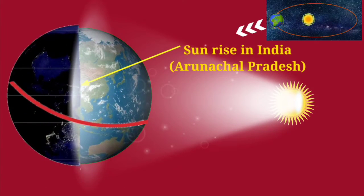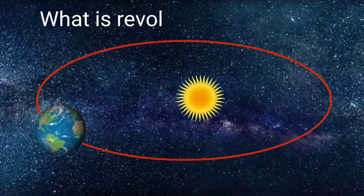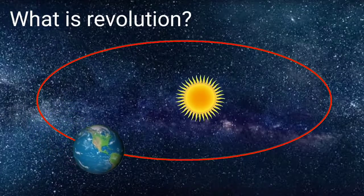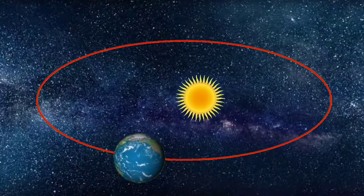Coming to the next point, what is revolution? Revolution means this is the movement of earth around the sun on a fixed path.